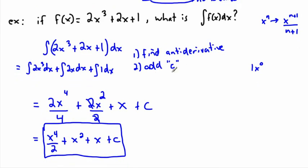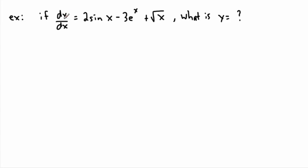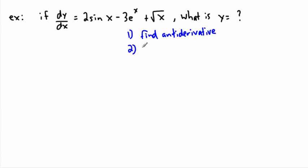Here's another example that looks different but involves the same process. We're given dy/dx — the derivative — and we want to find the original function y. To go from a derivative back to the original function, you take the integral, i.e., find the anti-derivative. So we're doing the exact same thing: step one, find the anti-derivative; step two, add a constant C.